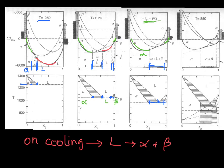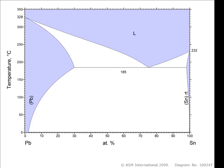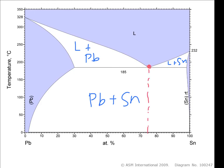Let's look at a real system with a eutectic diagram: lead and tin. Lead-tin was used for solder because it has a low eutectic temperature, meaning you only have to heat it up less in order for it to melt. On the diagram, we have solid lead as a single-phase region, liquid, solid tin, and lead plus tin down at the bottom. There is also liquid plus lead and liquid plus tin, with our eutectic temperature at 185°C and eutectic composition at about 75 atomic percent lead.